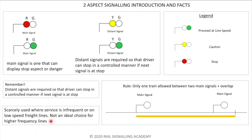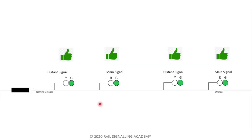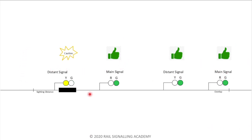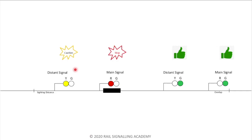Overlap is a margin we give after the red signal in case the train is not able to stop on time — we always have to account for that margin. One thing to note is that two aspect signaling is only here to explain the concept of headway; it is very rarely used in practice. In the first scenario, all signals are green so the train is good to go. When the train crosses the first signal, it can no longer show proceed since there is a train in front, so it downgrades to caution.